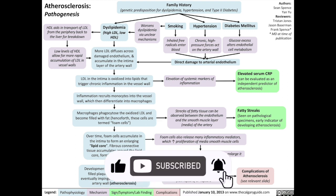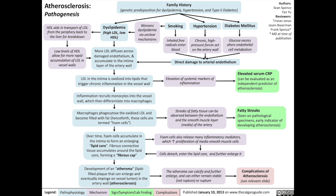These streaks of fatty tissue can be observed between the endothelium and the smooth muscle layer of the artery. These fatty streaks, as they're termed, can actually be seen on pathological specimens, which is an early indicator of developing atherosclerosis.